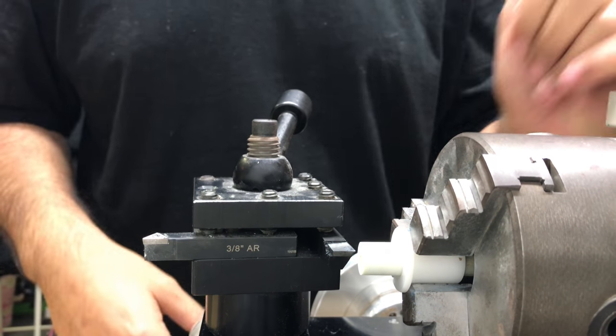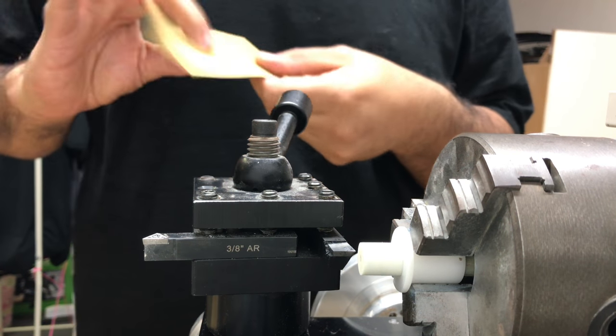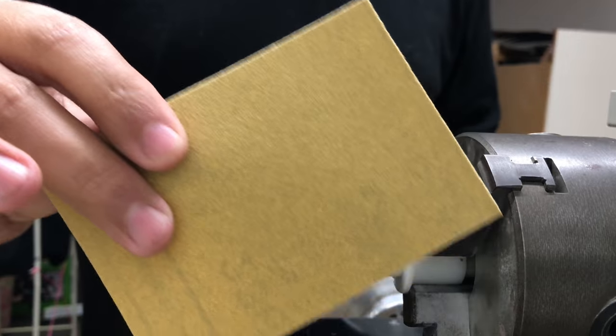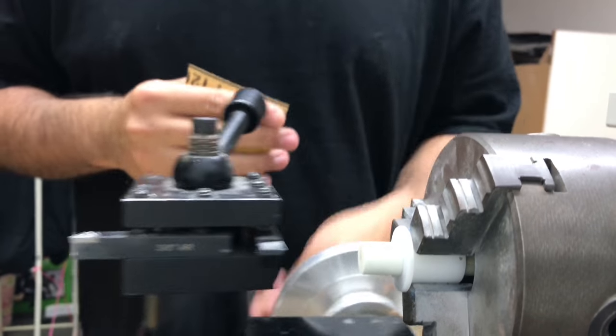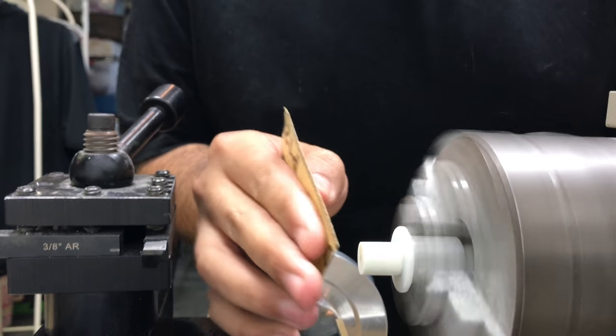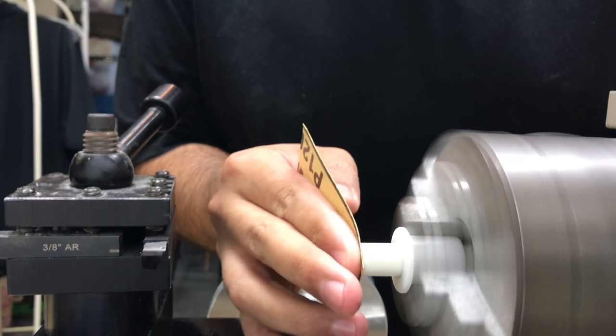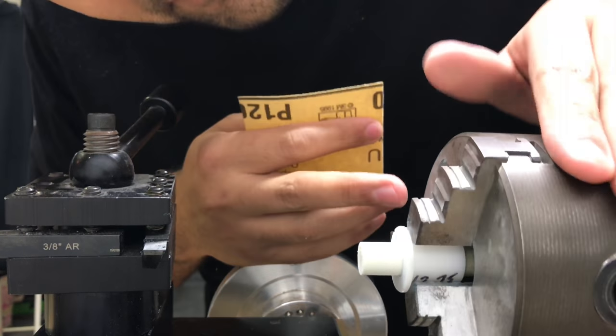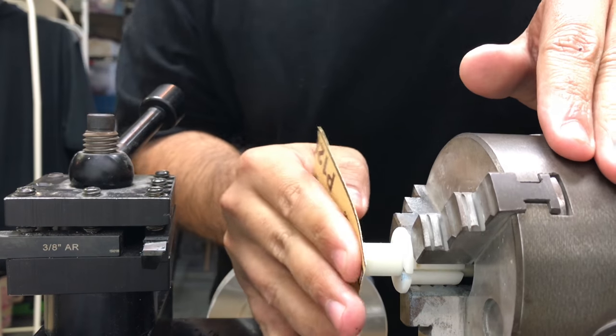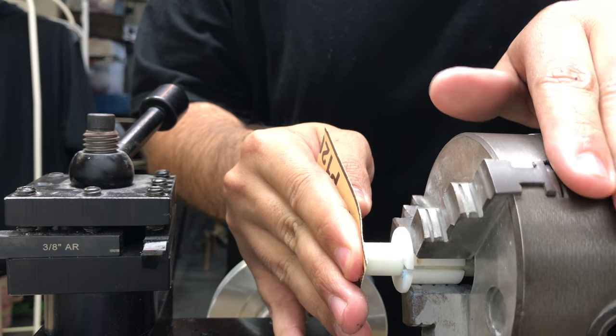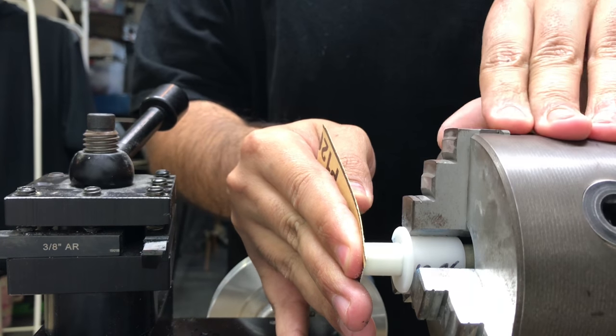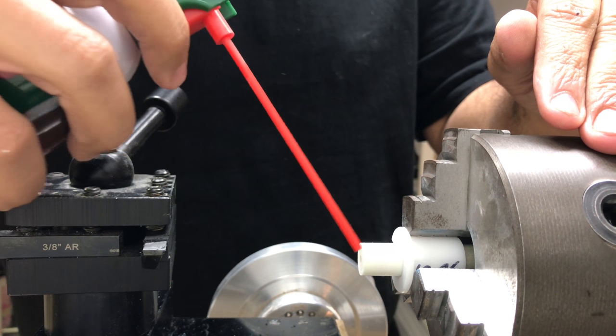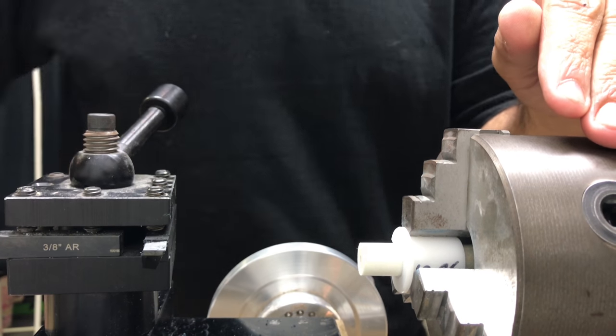So what I'm gonna do now is I'm gonna scuff the surface of the ferrule with some 120 grit sandpaper, and I'm gonna turn the machine on and just touch it. I just want to get that 120 scratch pattern. I see I got a pretty good one, and I'm just gonna rotate it 180 degrees, really saturate it. I'm gonna blow it off so I have a clean surface.